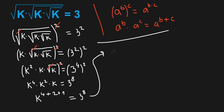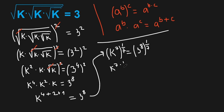So we have k to the power of 7 equals 3 to the power of 8. Now I'm going to raise both sides to the power of 1 over 7. We have k to the power of 7 times 1 over 7 equals 3 to the power of 8 times 1 over 7. We can eliminate here and what's left is k equals 3 to the power of 8 over 7.